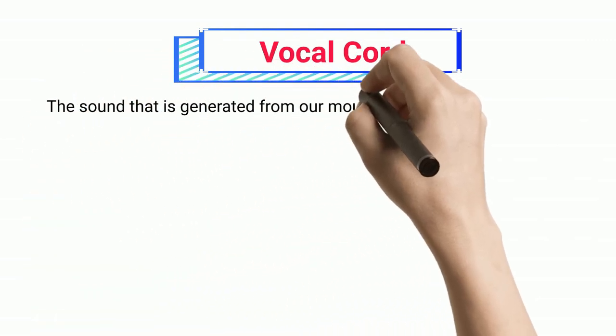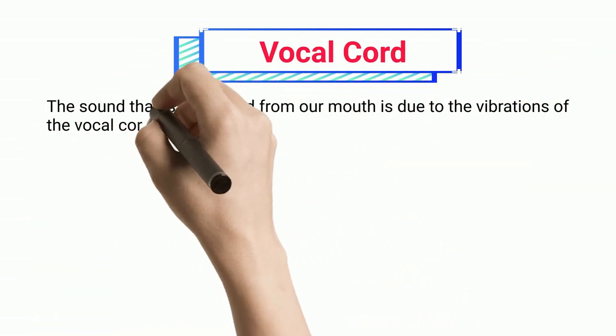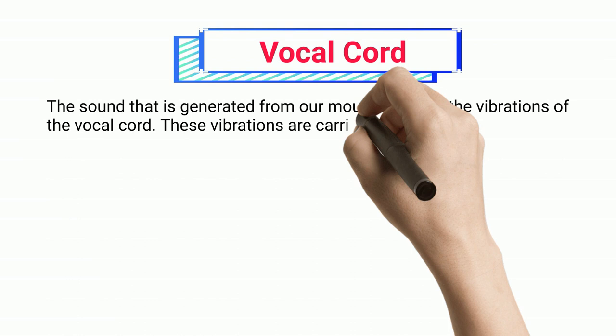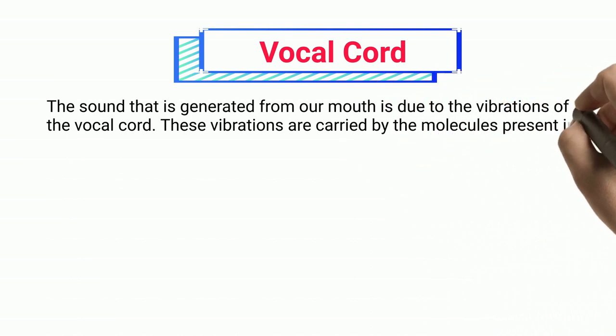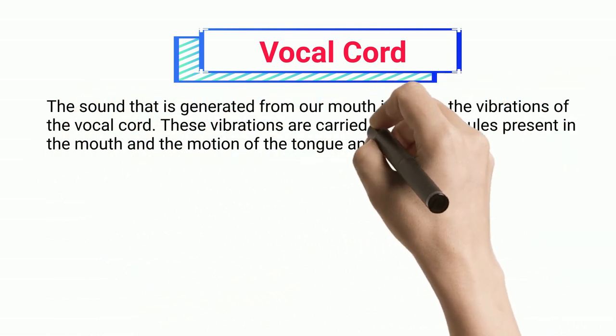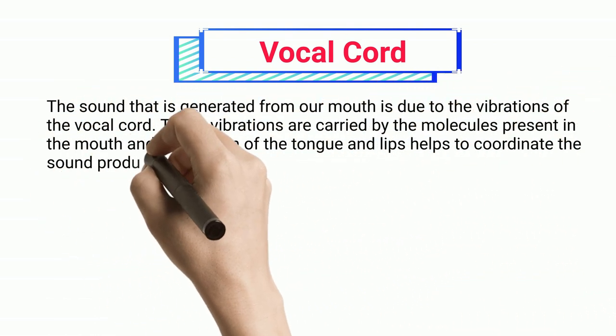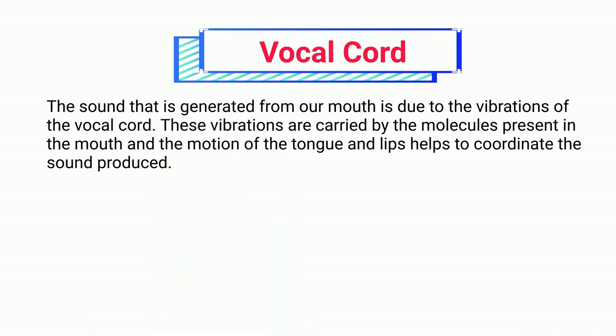Vocal cord: The sound generated from our mouth is due to the vibrations of the vocal cord. These vibrations are carried by the molecules present in the mouth, and the motion of the tongue and lips helps to coordinate the sound produced.